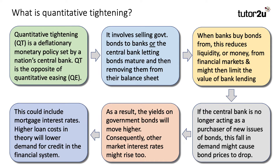So quantitative tightening, in theory, seeks to take some money out of the financial system, drain some of the liquidity from financial markets, limit lending, and raise interest rates in, for example, the bond market.